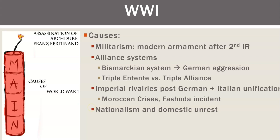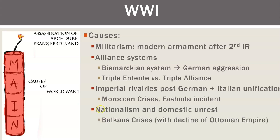Nationalism and domestic unrest — anytime your people are unhappy, a skillful demagogue like Hitler or Mussolini can blame all the problems on somebody else, somebody from another country. This is where racism comes in frequently. If someone looks or sounds differently, it's easy to say things would be going better if we just didn't have these people here.